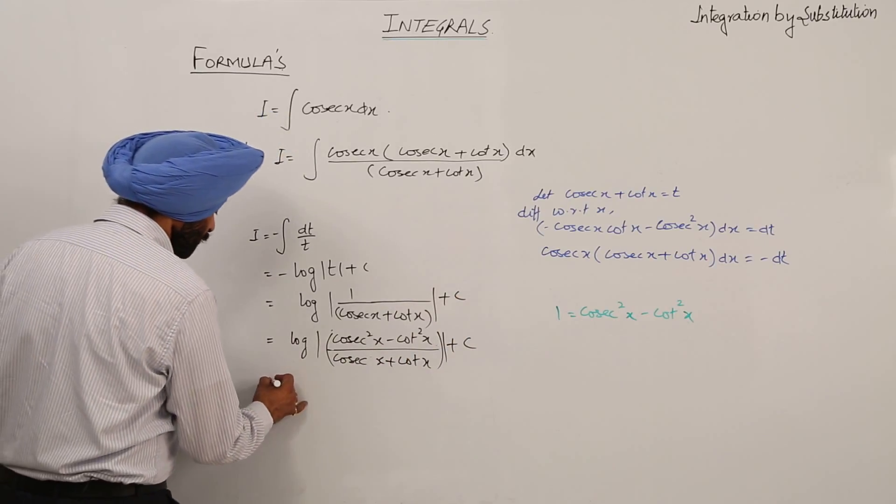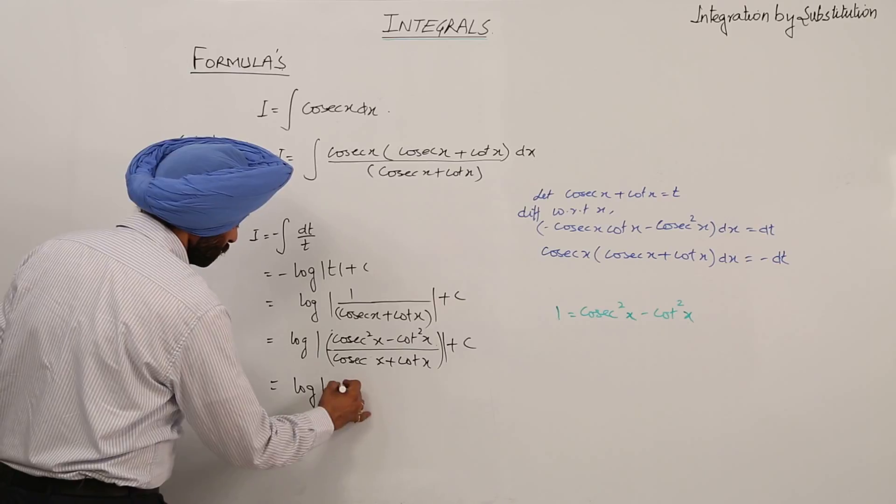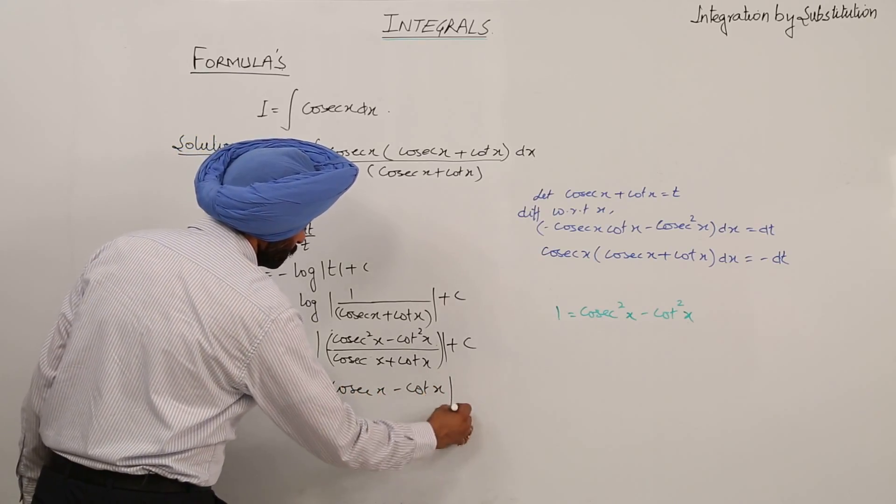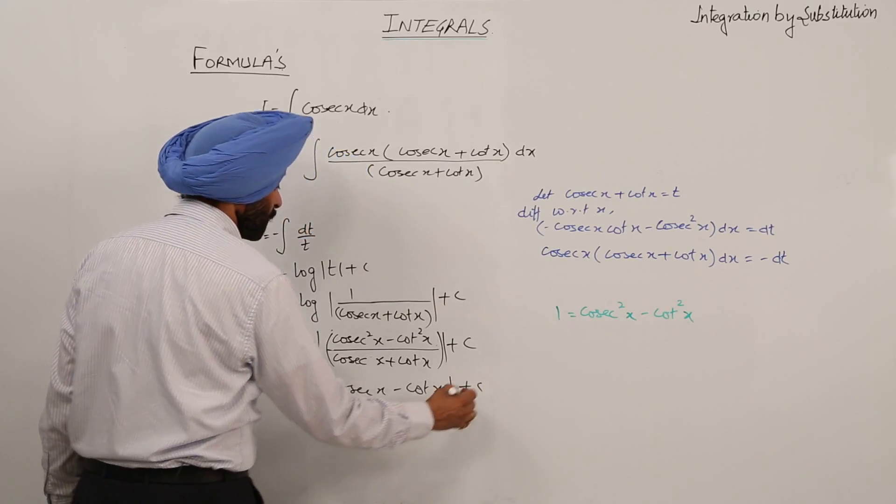So finally what we are having? Log cosecant x minus cot x plus c. Answer.